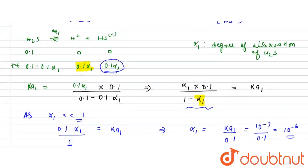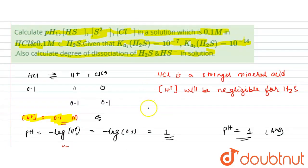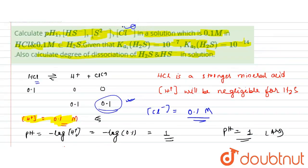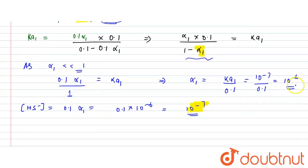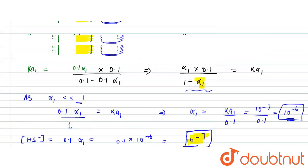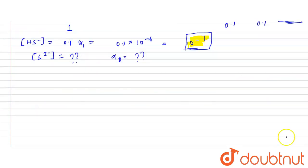So far we have found: [H⁺] = 0.1 M, [Cl⁻] = 0.1 M (complete dissociation of HCl), [HS⁻] = 10⁻⁷ M, and alpha1 (degree of dissociation of H₂S) = 10⁻⁶. What remains is to find [S²⁻] and alpha2, the degree of dissociation of HS⁻, from the second dissociation step.